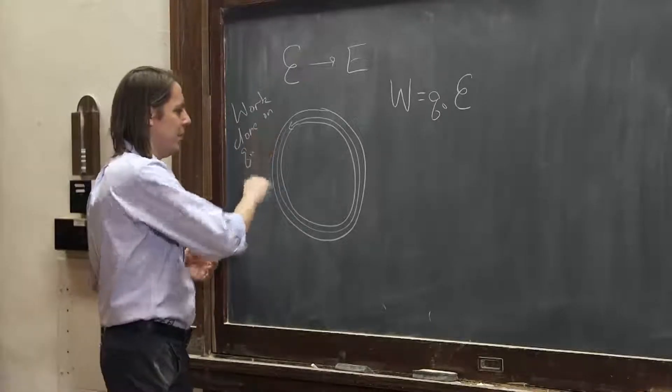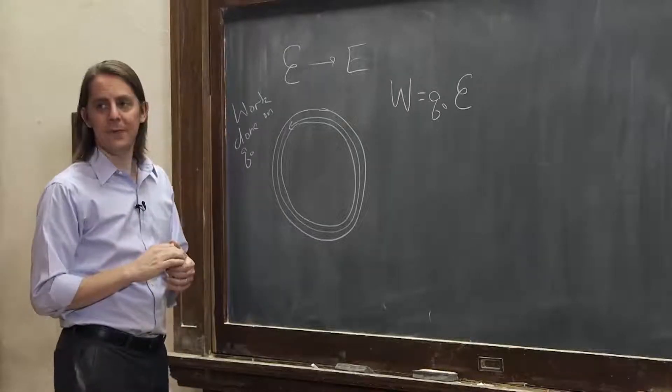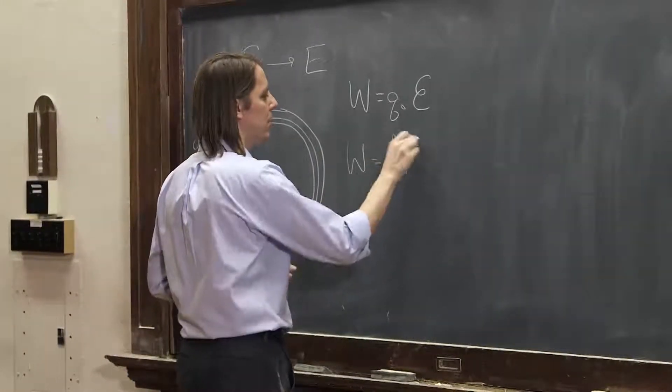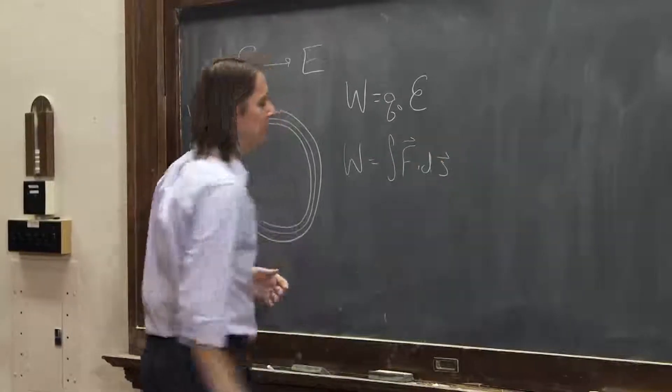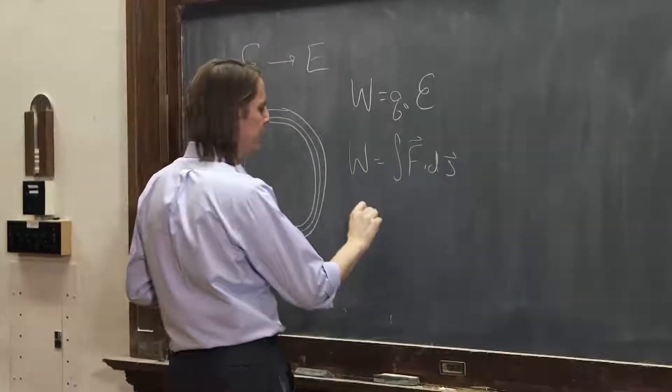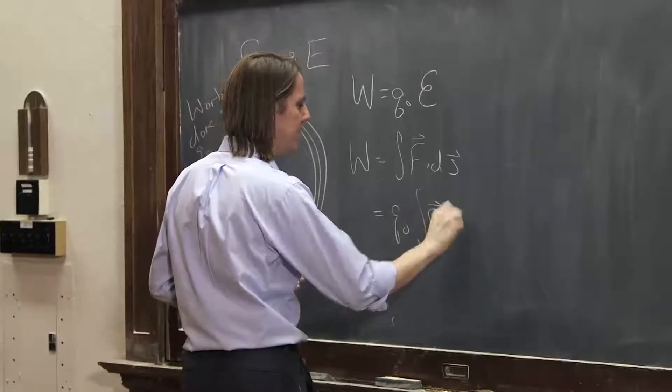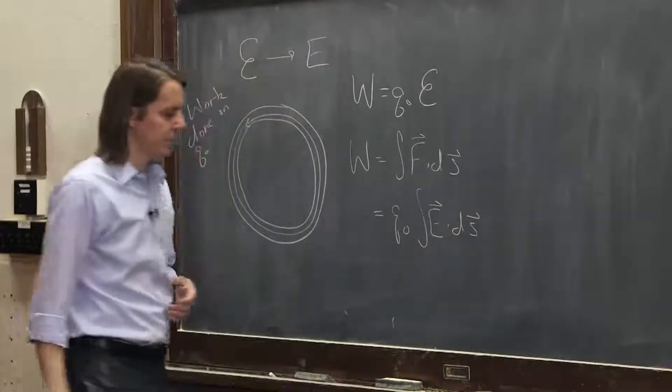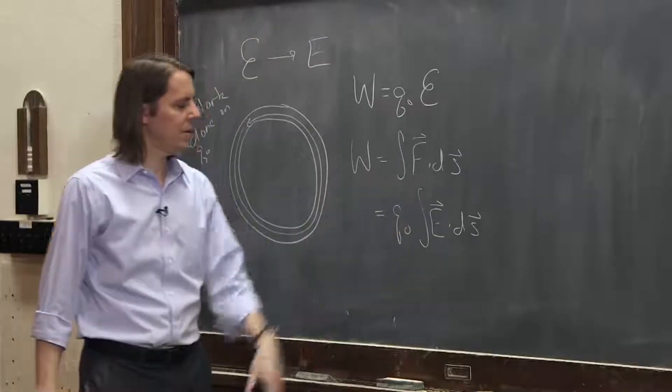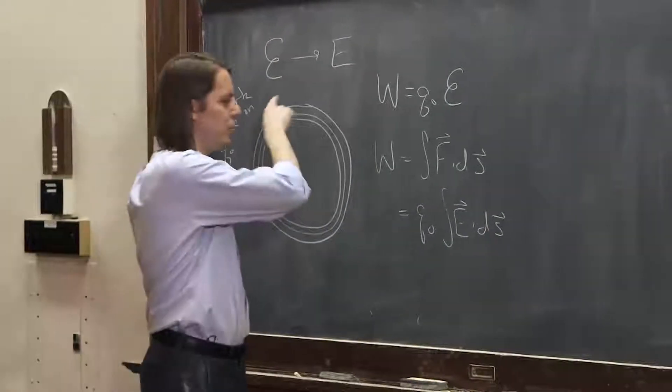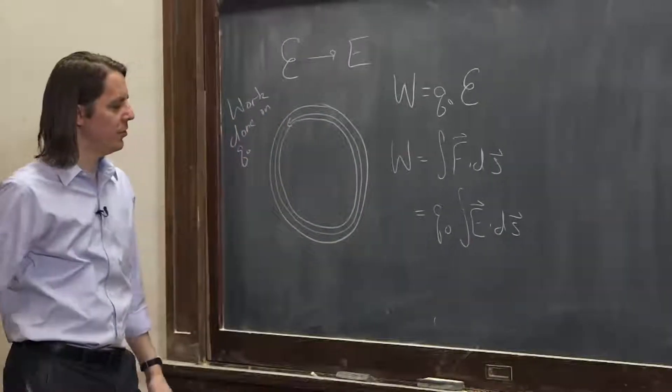If we think about pushing against the electric field, then the work would be the integral of F dot dS as we walk along. Or we could say it's equal to Q0 times the integral of E dot dS, because the force is QE. So that's how much work the electric field would do on a charge as it pushes it around the loop.